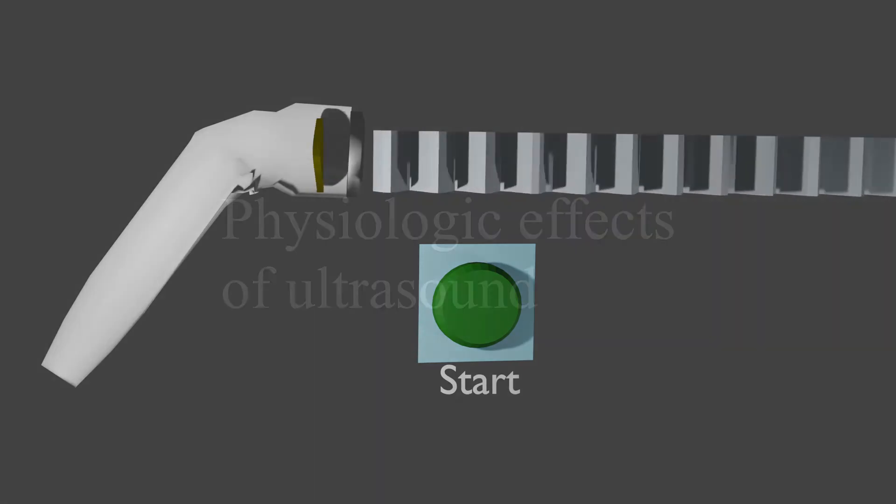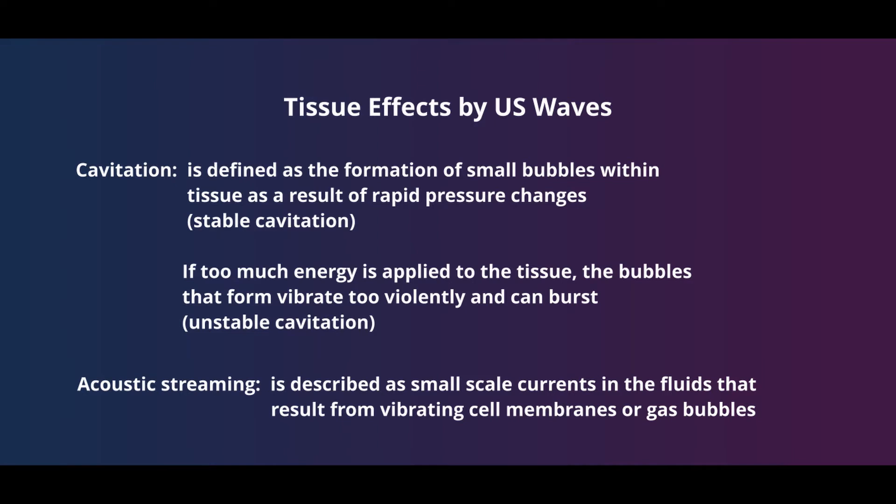So what happens when that energy reaches human tissue? While all the effects of ultrasound are not completely understood, current theory suggests that ultrasound achieves its physiologic effects through cavitation and acoustic streaming. Cavitation refers to the formation of small bubbles that result from the rapid pressure changes created by the ultrasound wave. The ultrasound waves also cause other molecules to vibrate, and as a result, microcurrents are created in the fluids that surround the vibrating tissues. We refer to these small currents as acoustic streaming.